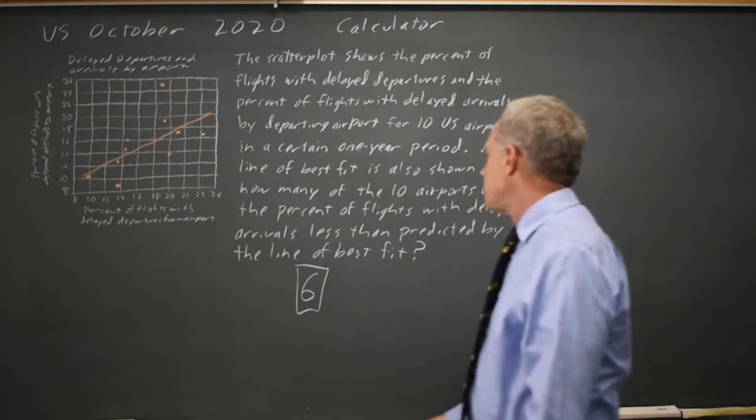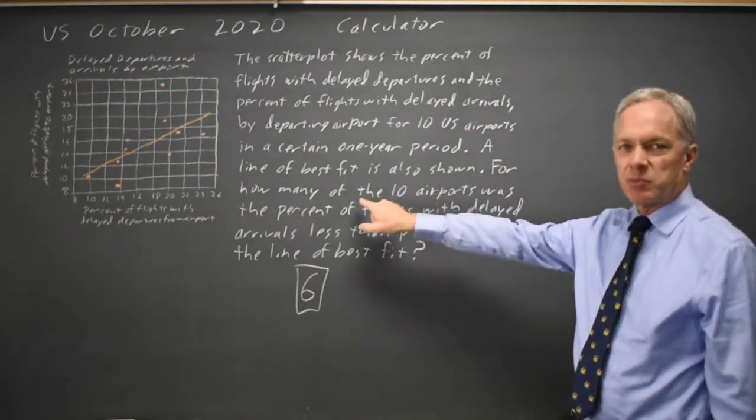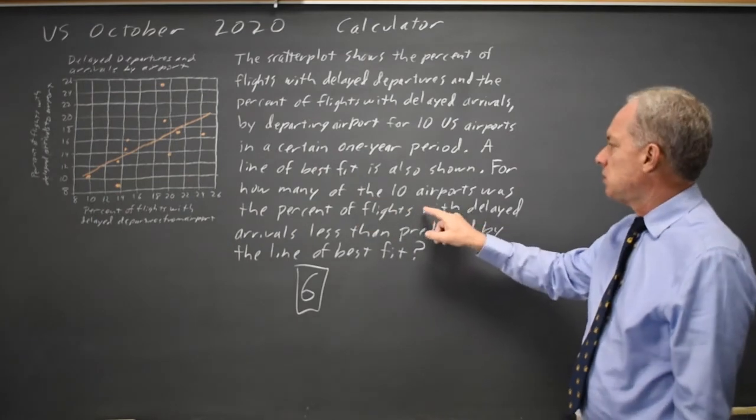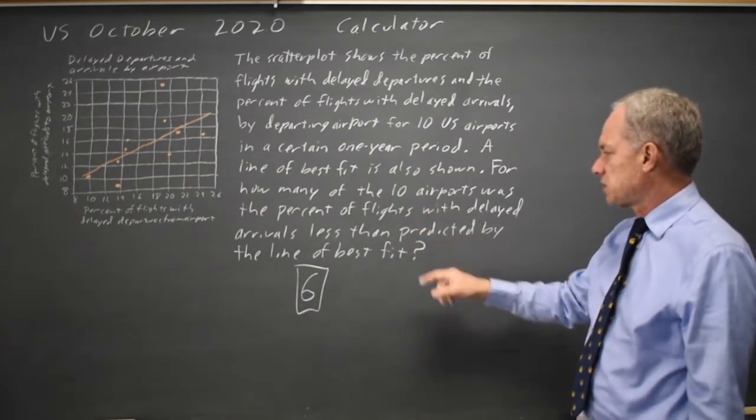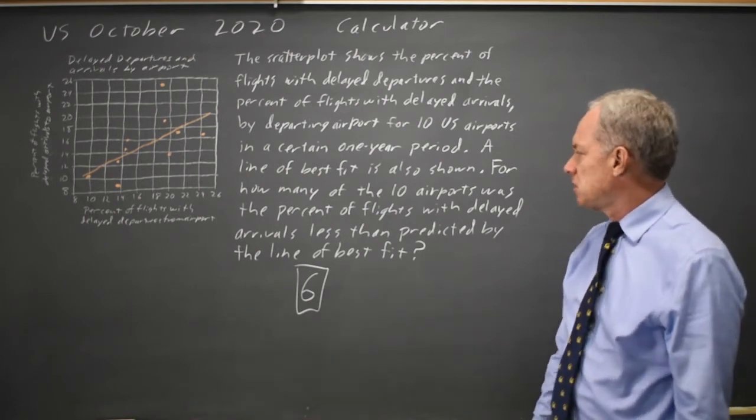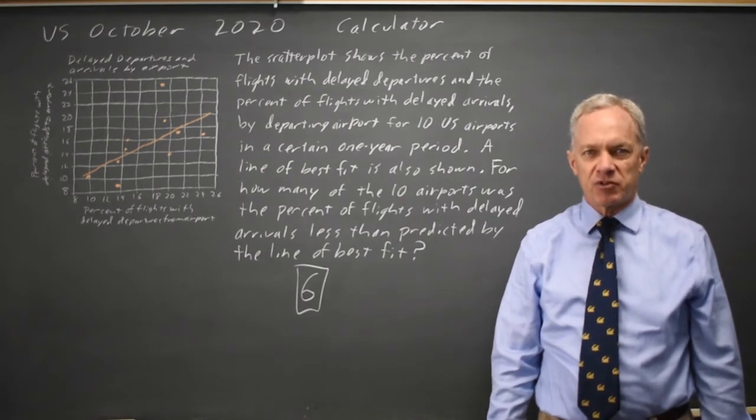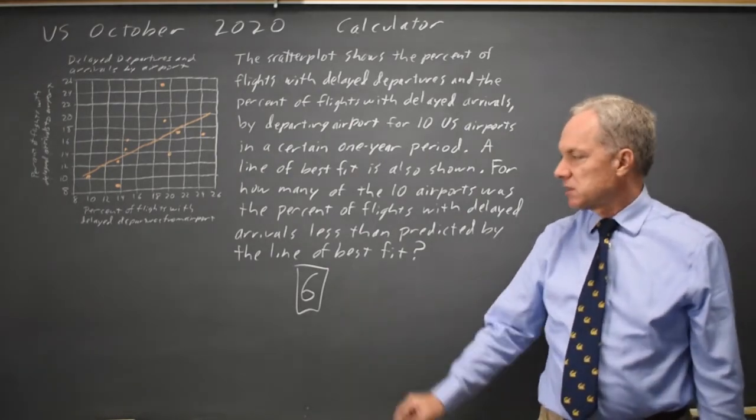Let's read here to make sure that's what they were asking. For how many of the ten airports, so that's how many, not a fraction or a percent, was the percent of flights with delayed arrivals less than predicted? And delayed arrivals is the Y axis, so for how many flights is the Y value below the line of best fit? The answer is six.